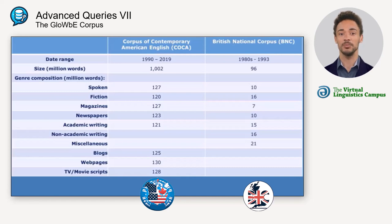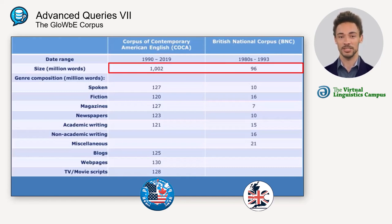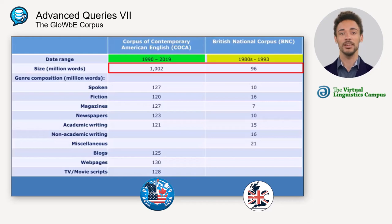Note that they are both balanced corpora, but they differ in size and the genres included, and that the BNC only contains texts up to 1993, while the COCA is more up-to-date.